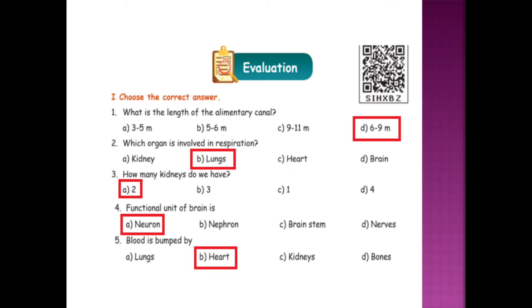The functional unit of the brain is: neuron, nephron, brain stem, nerves. The answer is neuron. Blood is pumped by: lungs, heart, kidneys, bones. The answer is heart.